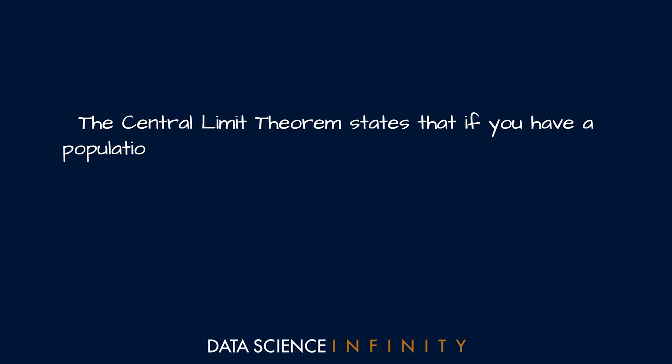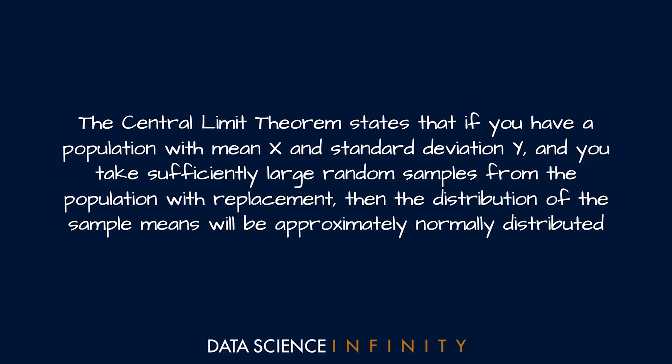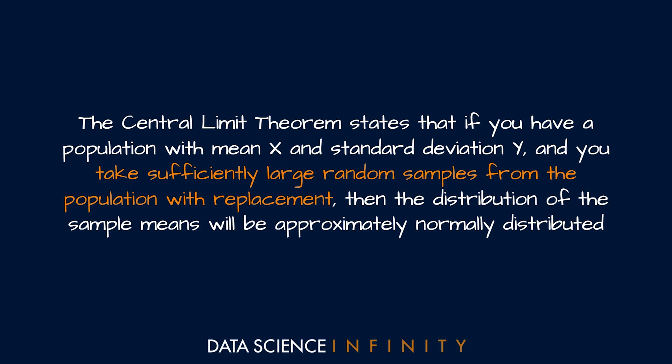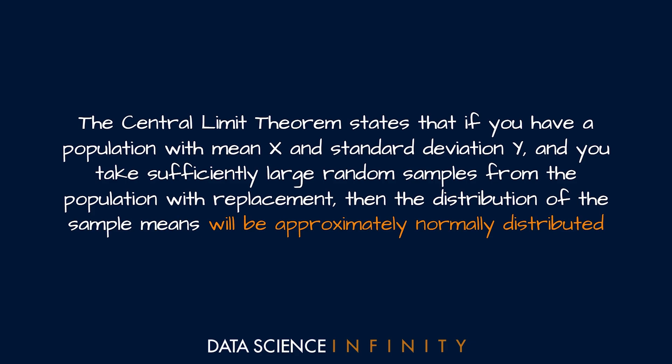To finish, let's revisit the definition. The central limit theorem states that if you have a population with mean x and standard deviation y — essentially any population where a mean can be calculated — and you take sufficiently large random samples with replacement, putting sample members back each time to allow reselection, then the distribution of the sample means will be approximately normally distributed. A common rule of thumb is that sample size should be at least 30, though sometimes much larger samples are needed. The more sample means we have, the closer we get to normality.